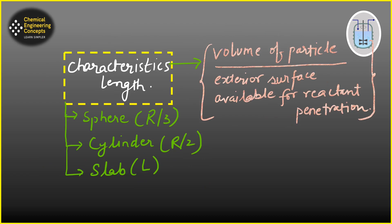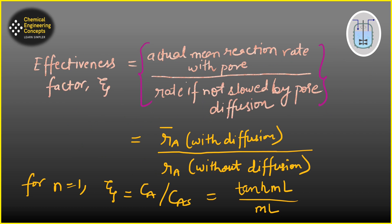The characteristic length is the ratio of particle volume to the exterior surface available for reactant penetration. For a sphere it is R/3, for a cylinder it is R/2, and for a slab it is simply L. Remember: characteristic length = volume of particle / exterior surface area.